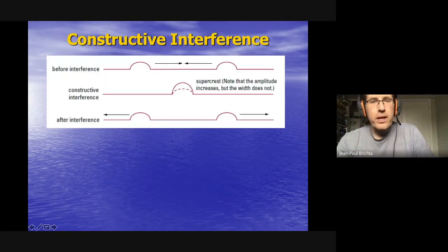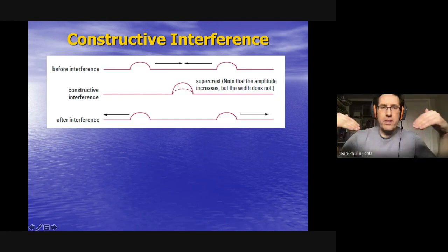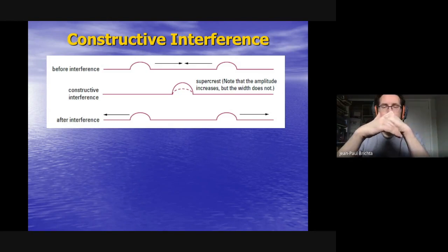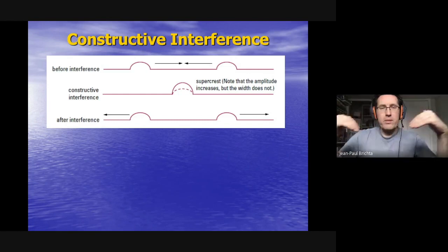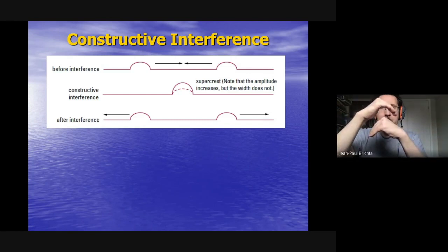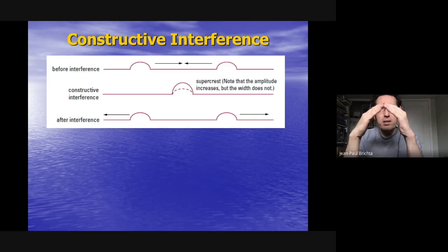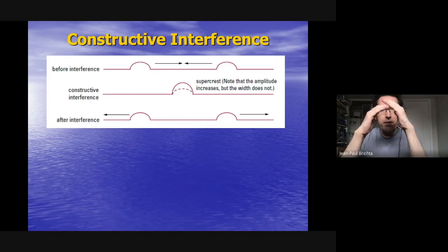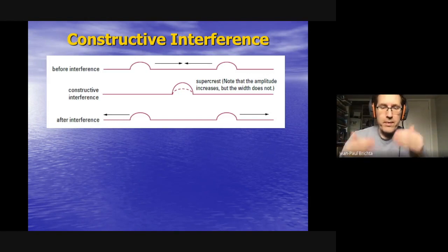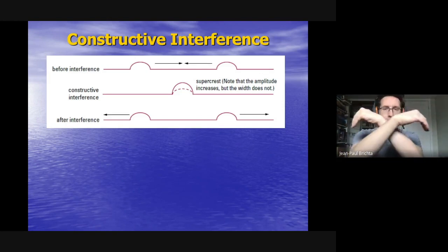In constructive interference, a pulse moving right and a pulse moving left meet. They overlap — it's like one is on top of the other — and you get a large combined wave momentarily. Then they keep moving past each other as if the interference never happened, returning to exactly the same size they started with.